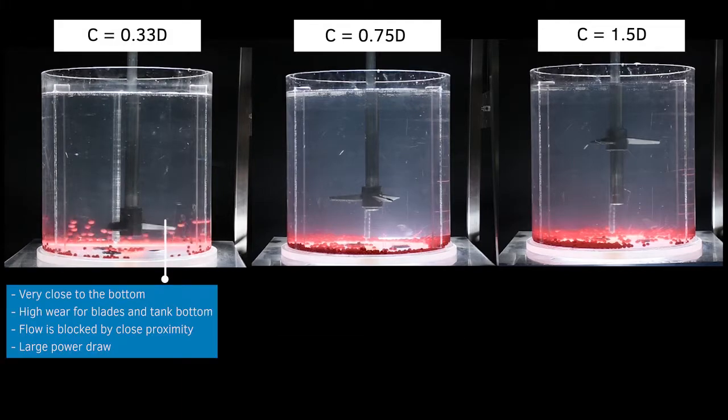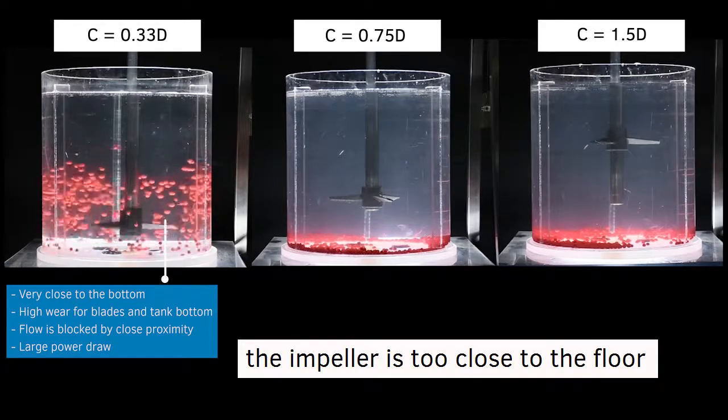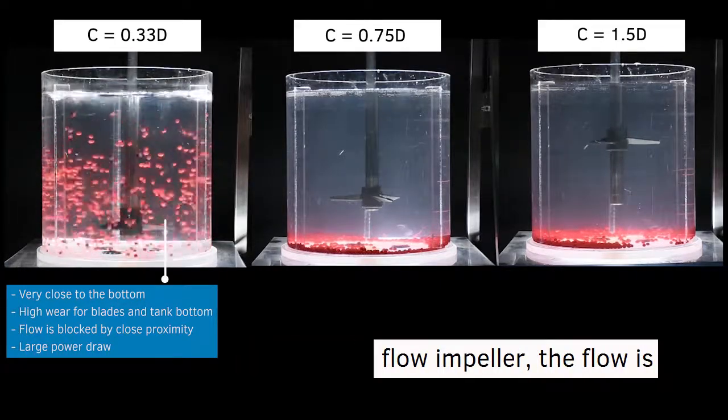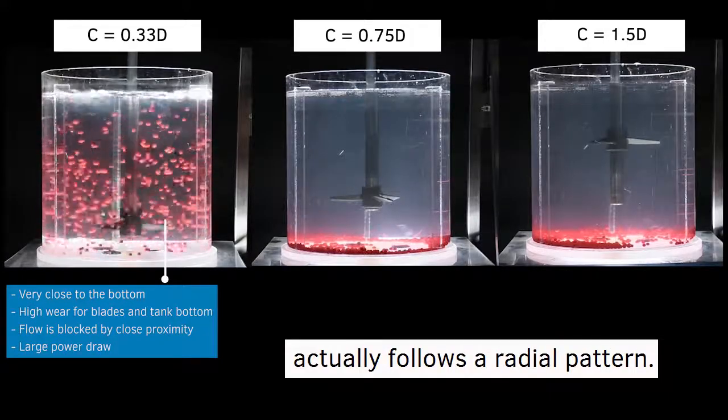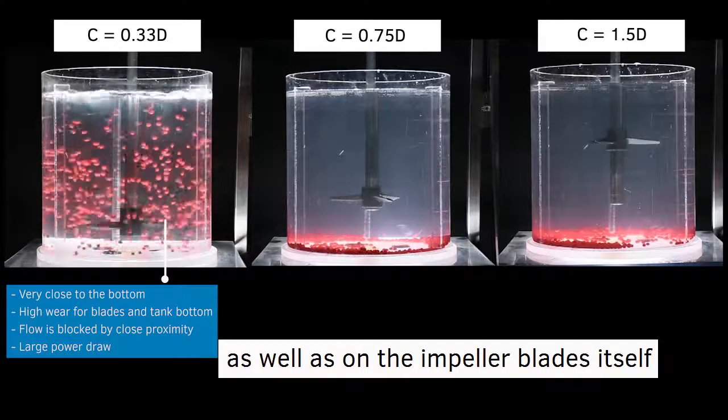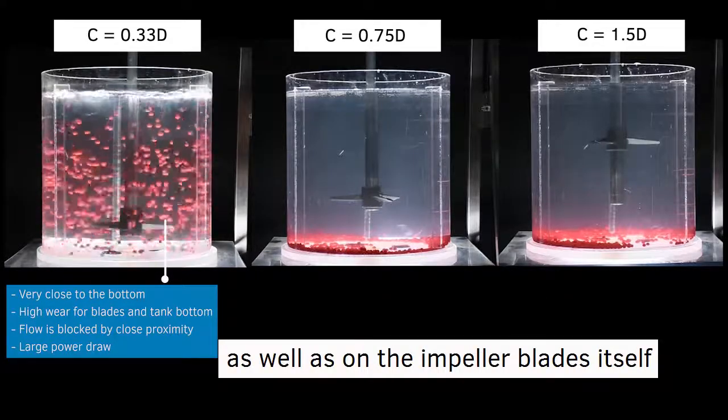In the first tank, the impeller is too close to the floor. Although it is an axial flow impeller, the flow actually follows a radial pattern. You will experience high wear on the floor of the tank as well as on the impeller blade itself.